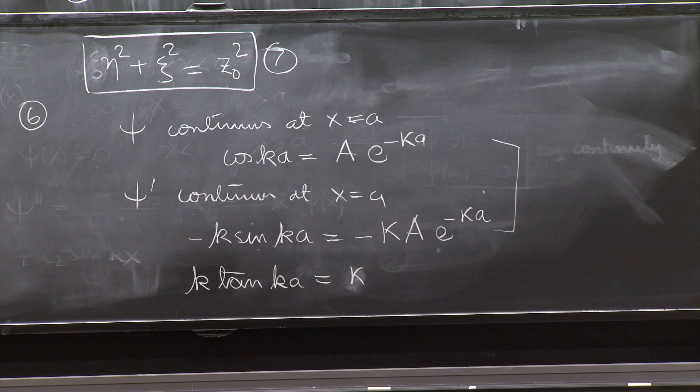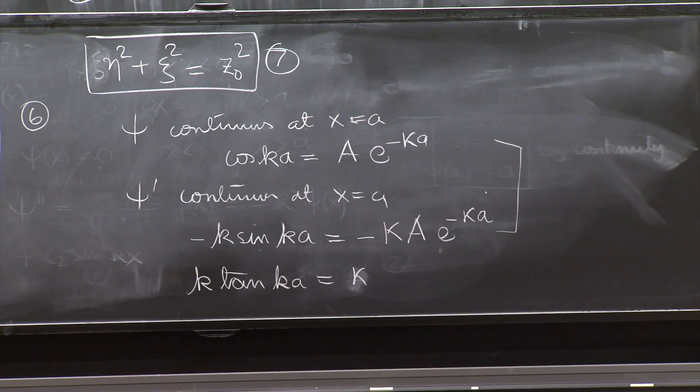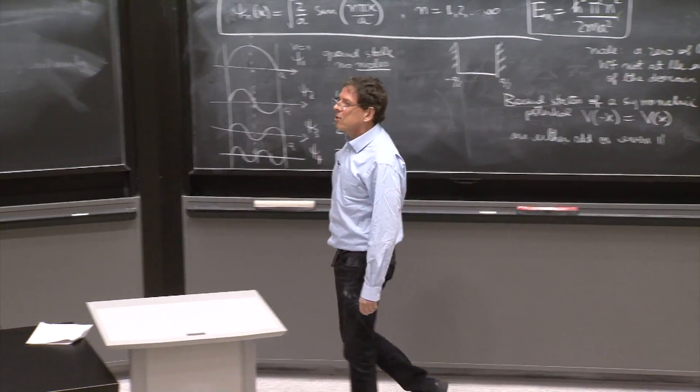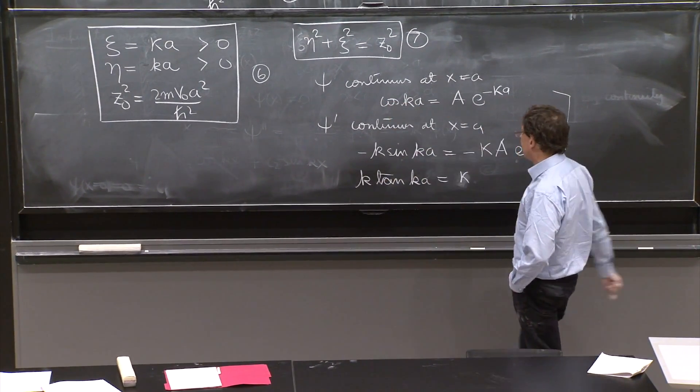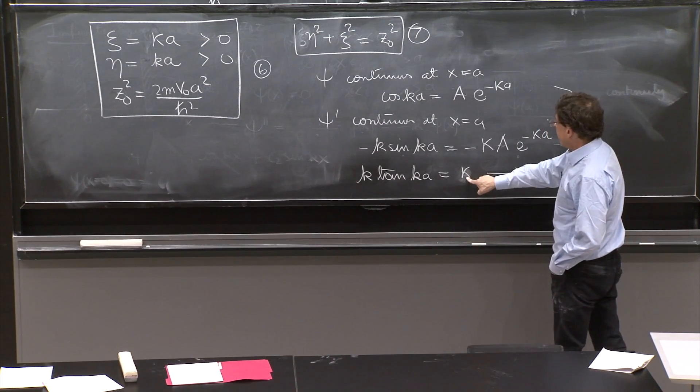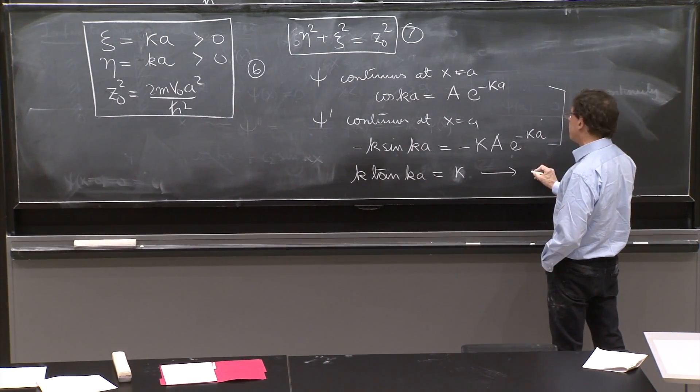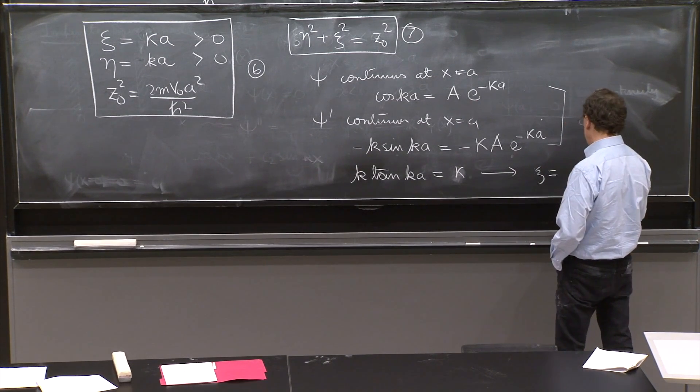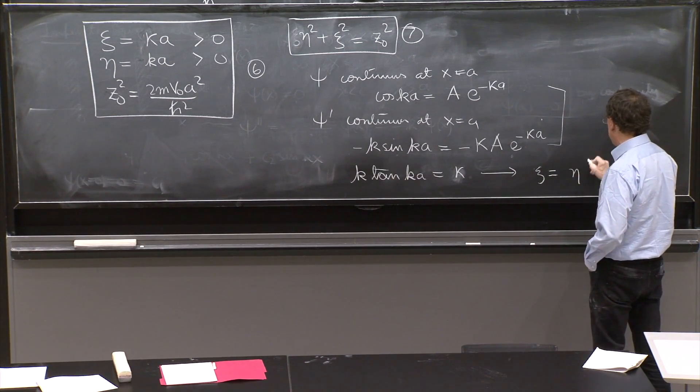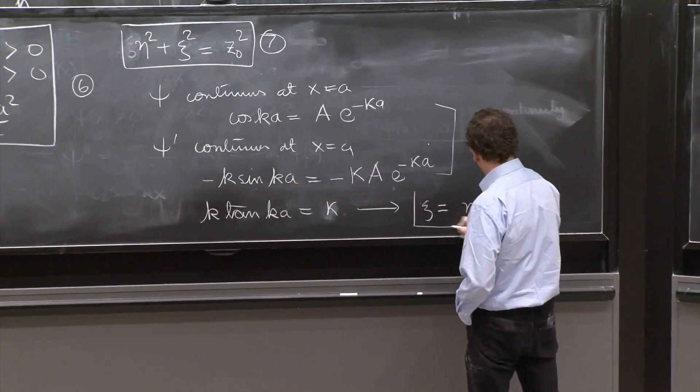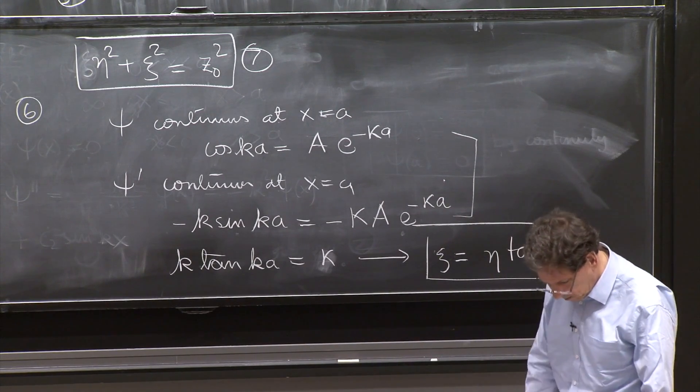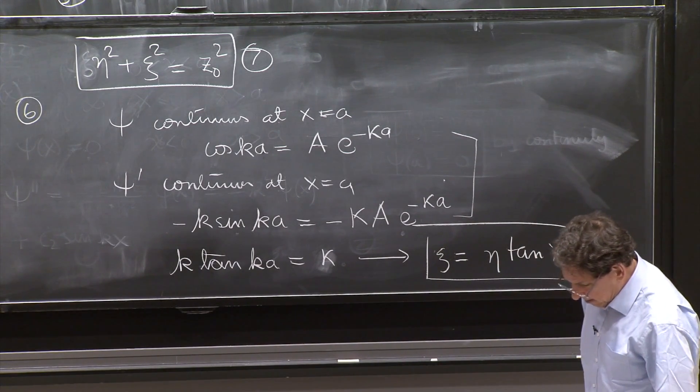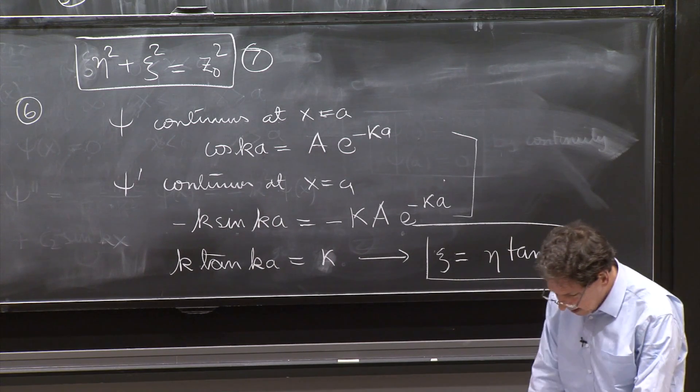So we can cancel those minuses and you get k tan ka is equal to minus kappa. But you already are convinced, I hope, on the idea that we should not use equations that have units. So I will multiply by little a and little a to get etas and psi's. And therefore, the right-hand side becomes psi equals, and the left-hand side becomes eta tan eta.